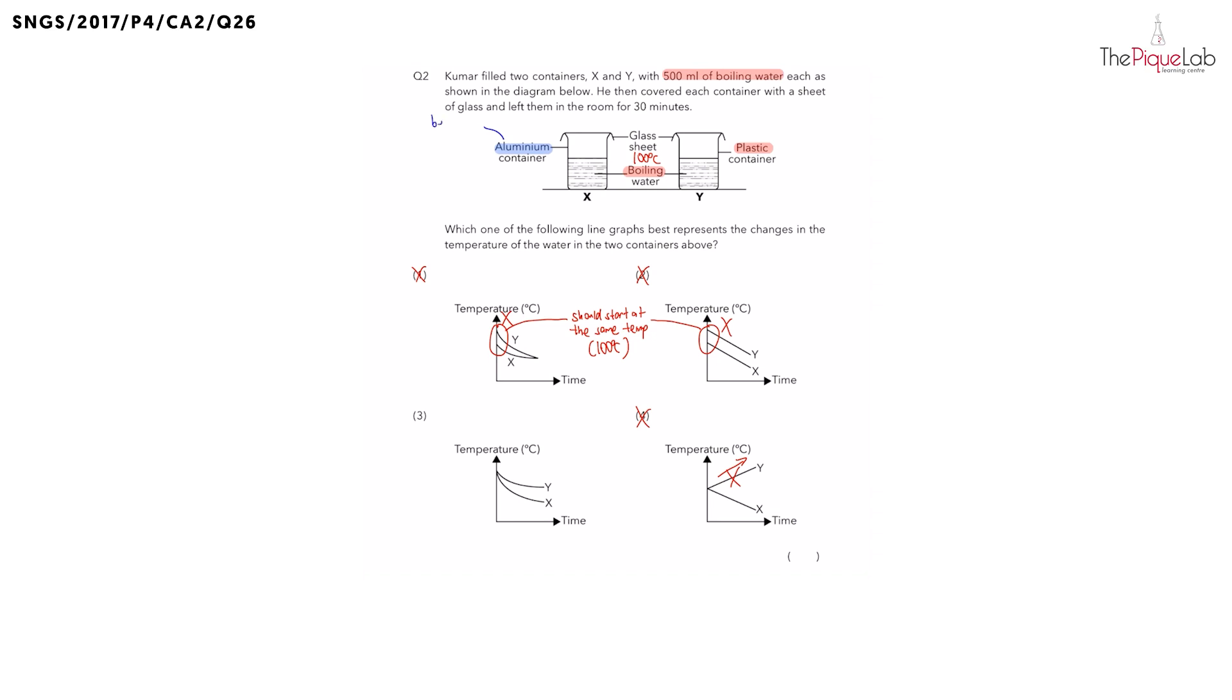So I am going to write this down at the side. We know it is a better conductor of heat. And since it is a better conductor of heat, this would mean the aluminium, is it going to conduct the heat from the warmer water to the cooler surrounding air faster or slower. The aluminium is going to conduct the heat faster.